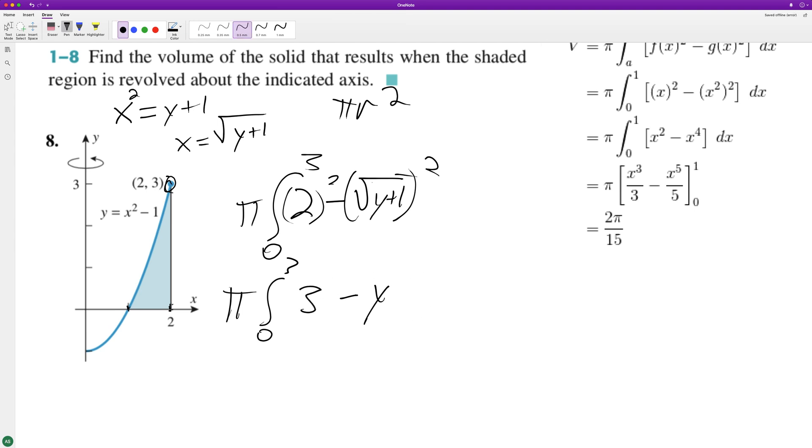Go ahead and integrate. We have pi, and then three y minus y squared over two, from zero to three. What happens now is we get pi times nine minus nine over two, and then just zero.